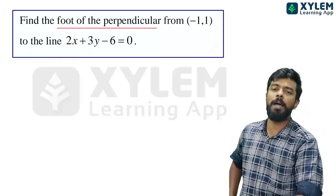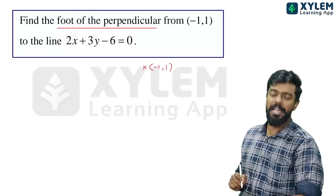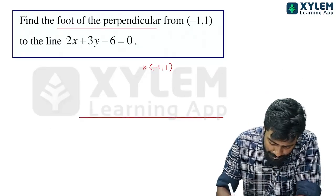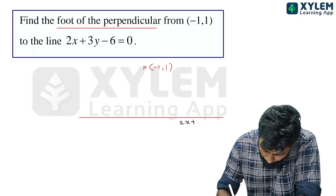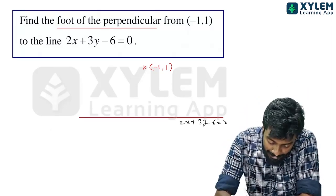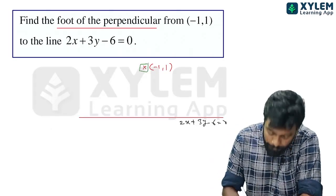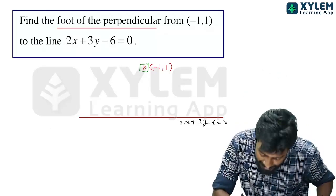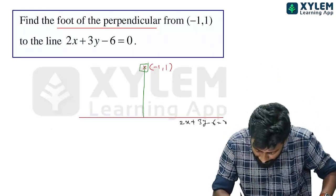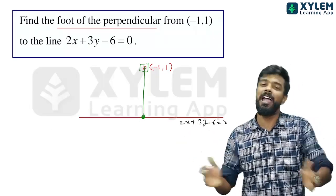Find the foot of the perpendicular from the point (-1, 1) to the line 2x plus 3y minus 6 equals 0.